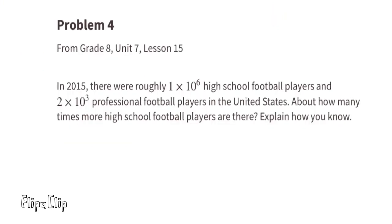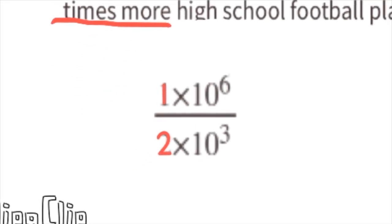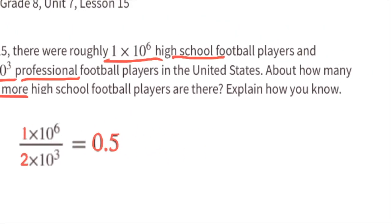Problem number four from eighth grade Unit 7, Lesson 15. In 2015 there were roughly 1 × 10⁶ high school football players and 2 × 10³ professional football players in the United States. About how many times more high school football players are there? I can represent this as the ratio (1 × 10⁶) / (2 × 10³).